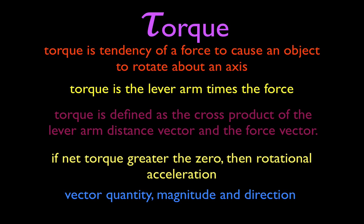So torque is often simply said to be the force times the lever arm. Mathematically, torque is defined as the cross product of the lever arm distance vector and the force vector. Those are three common definitions or descriptions of torque that you'll see.